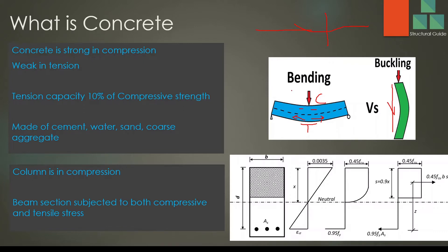There are places where we have both tension and compression. You can see the section of a beam — this part is in compression and this part is in tension. You can see the stress-strain variation of the concrete. This has to be considered during the design.